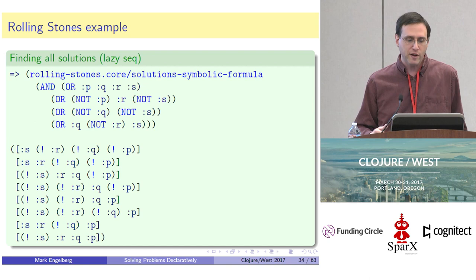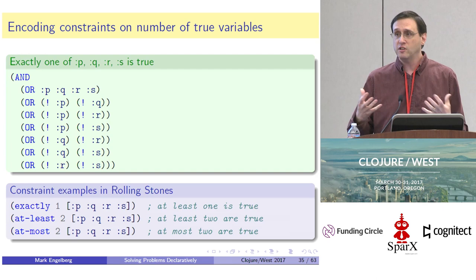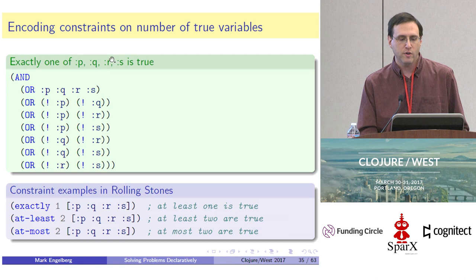There's also a function called solutions-symbolic-formula which generates a lazy sequence of all possible solutions. If we're going to apply this to something like the Y-Cover problem, we already saw that it's mostly about exactly-one constraints, so we need to know how to transform that into a logical formula. It turns out there's always a way to do that.